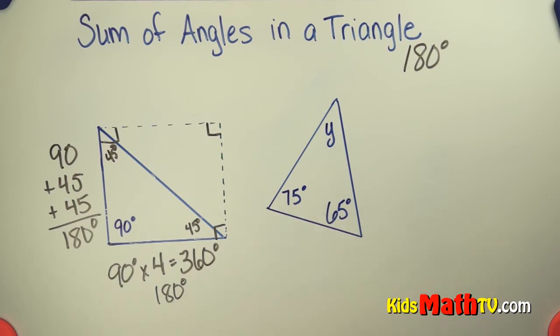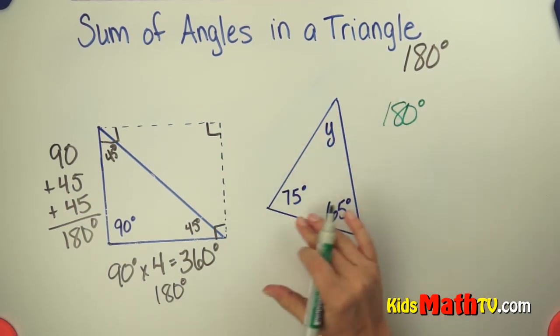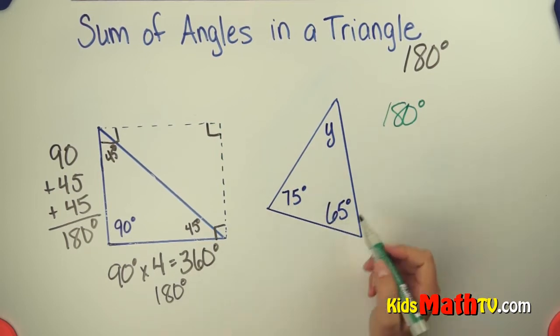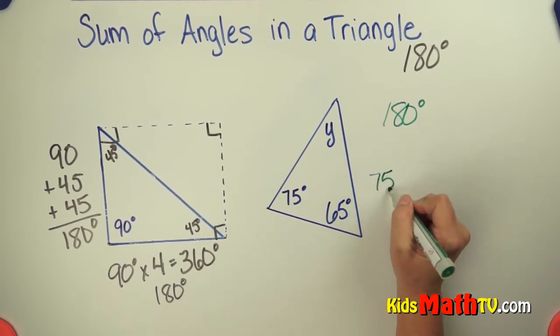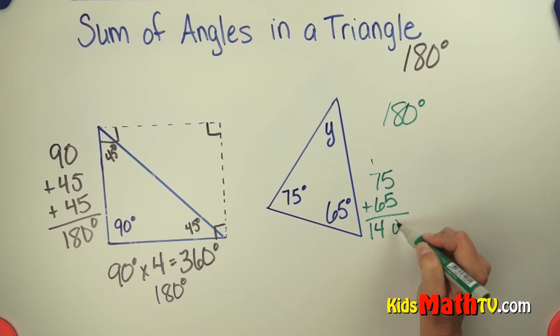We know that the whole triangle is 180 degrees. By definition, a triangle is 180 degrees. What I can do then is add 75 degrees plus 65 degrees. Add those up and that's 140 degrees.